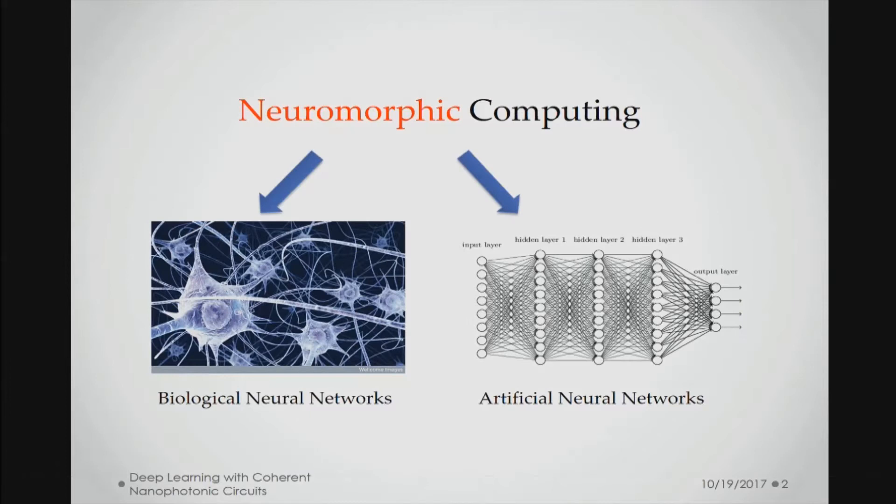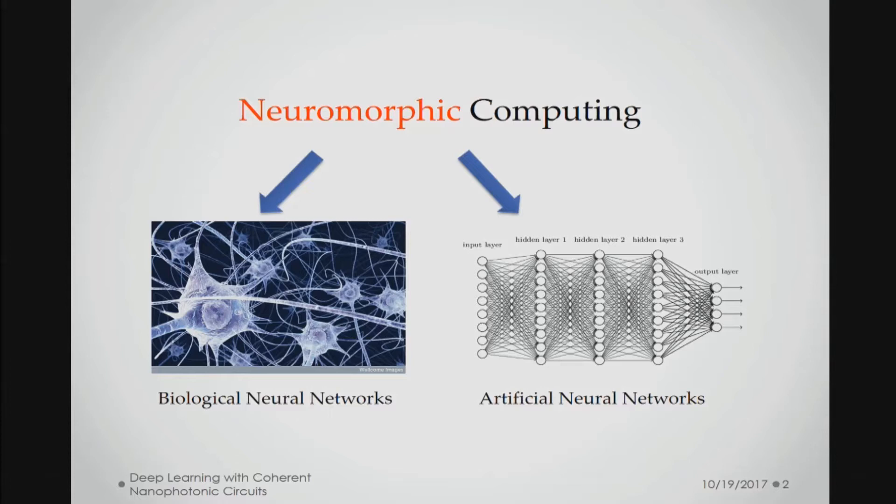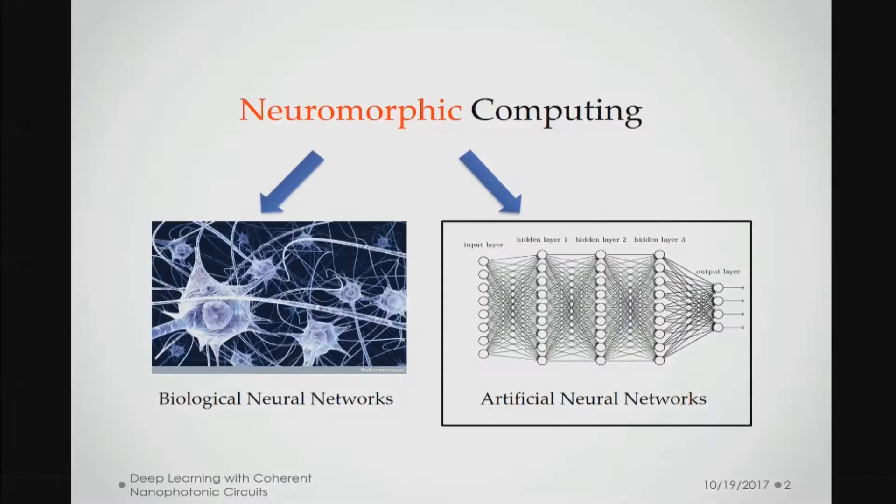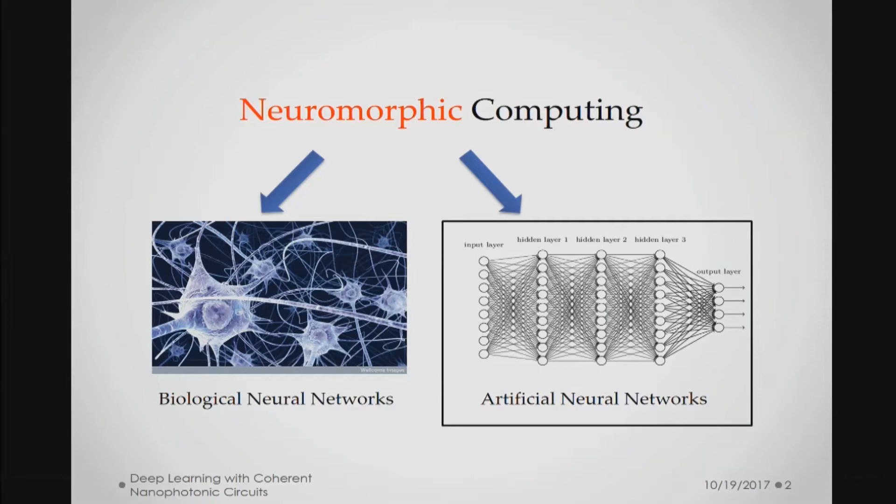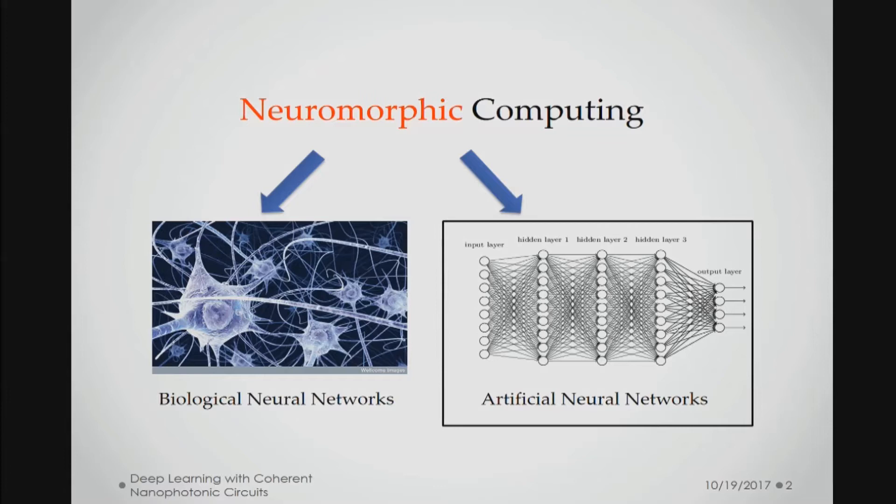Neuromorphic computing has two big groups of effort. On the left side, people are directly trying to build hardware that mimics the biological brain, like IBM's TrueNorth with spiking neurons. There's another effort trying to build specialized hardware to implement artificial neural networks, an algorithm abstracted from how the brain works. The following 20 minutes will focus on using nanophotonics to build hardware that implements artificial neural networks.